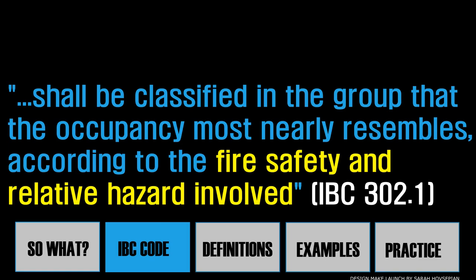The best way to understand how the building code comes up with classifications is to read what the IBC states about atypical occupancies. Such structures shall be classified in the group which the occupancy most nearly resembles, according to the fire safety and relative hazard involved. This tells us each occupancy classification was determined by fire safety and relative hazard performance data. The code takes a best-fit philosophical approach, which sometimes leads to a negotiation phase with the authority having jurisdiction.